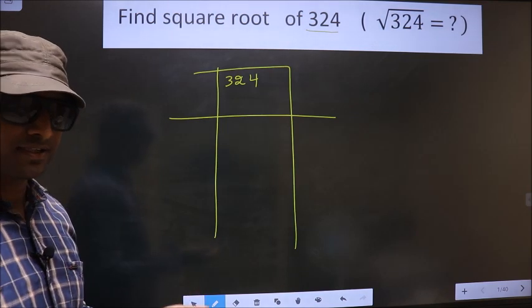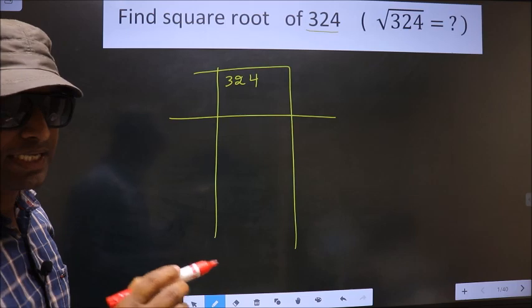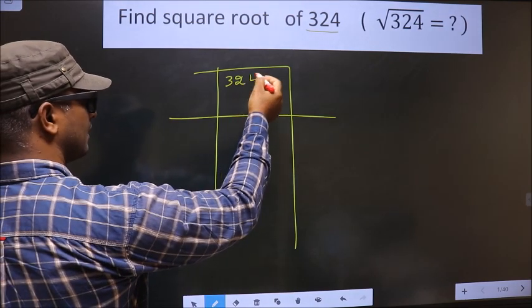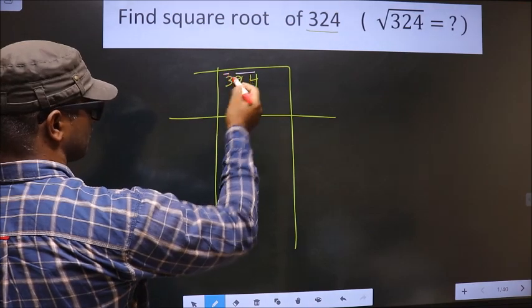Okay, next. Now we should divide the given number into pairs, starting from this side. These two numbers, one pair, this number is alone, so let it be alone.